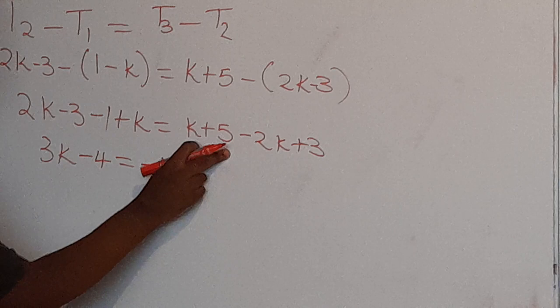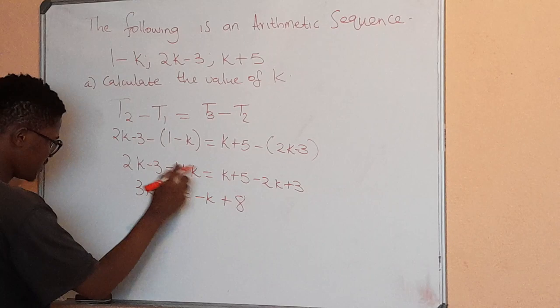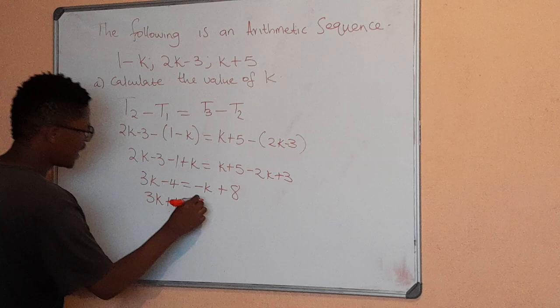We'll take negative k to the other side, it will be 3k plus k equals to 8, and then we'll take negative 4 to the other side, it will be positive 4.